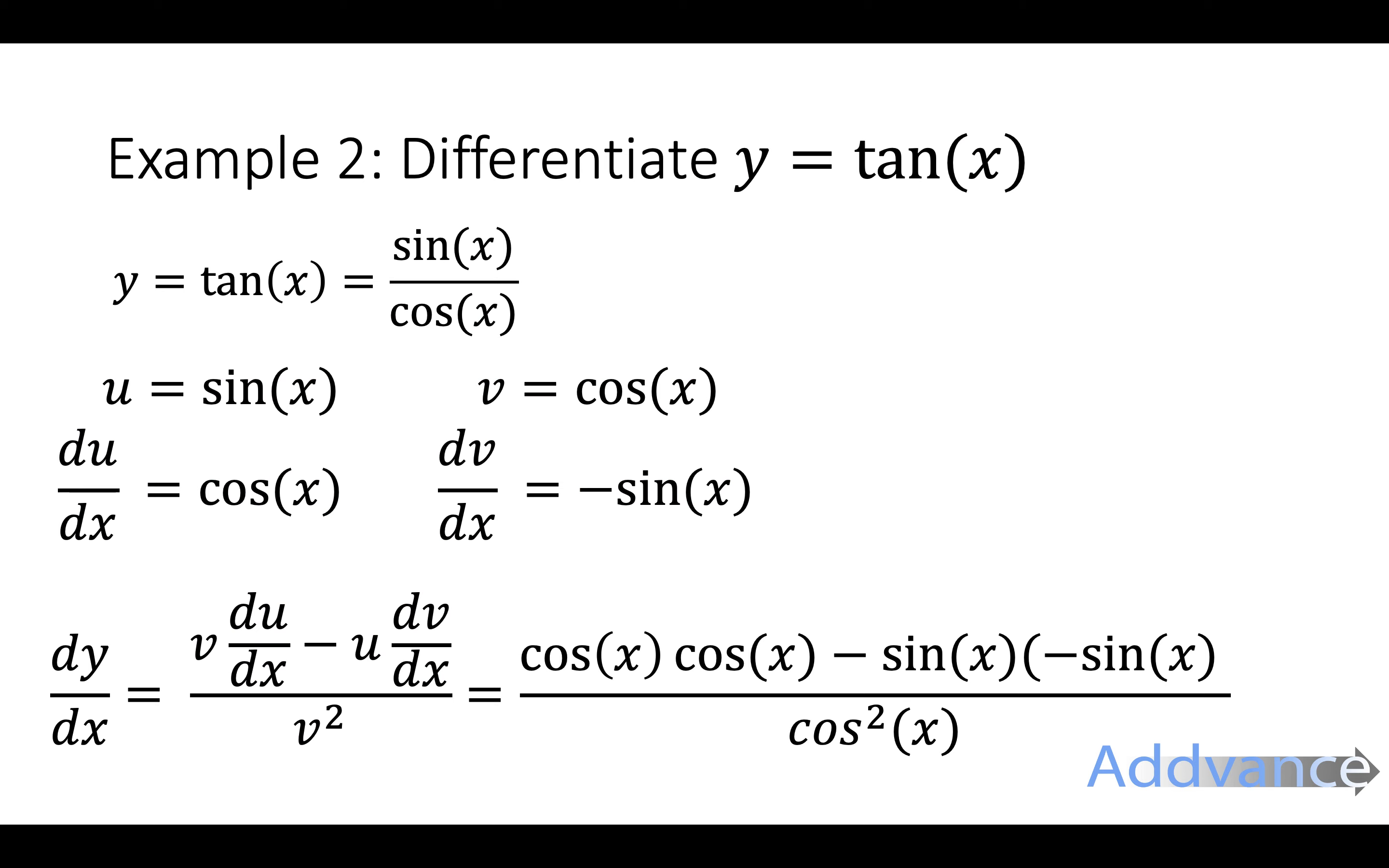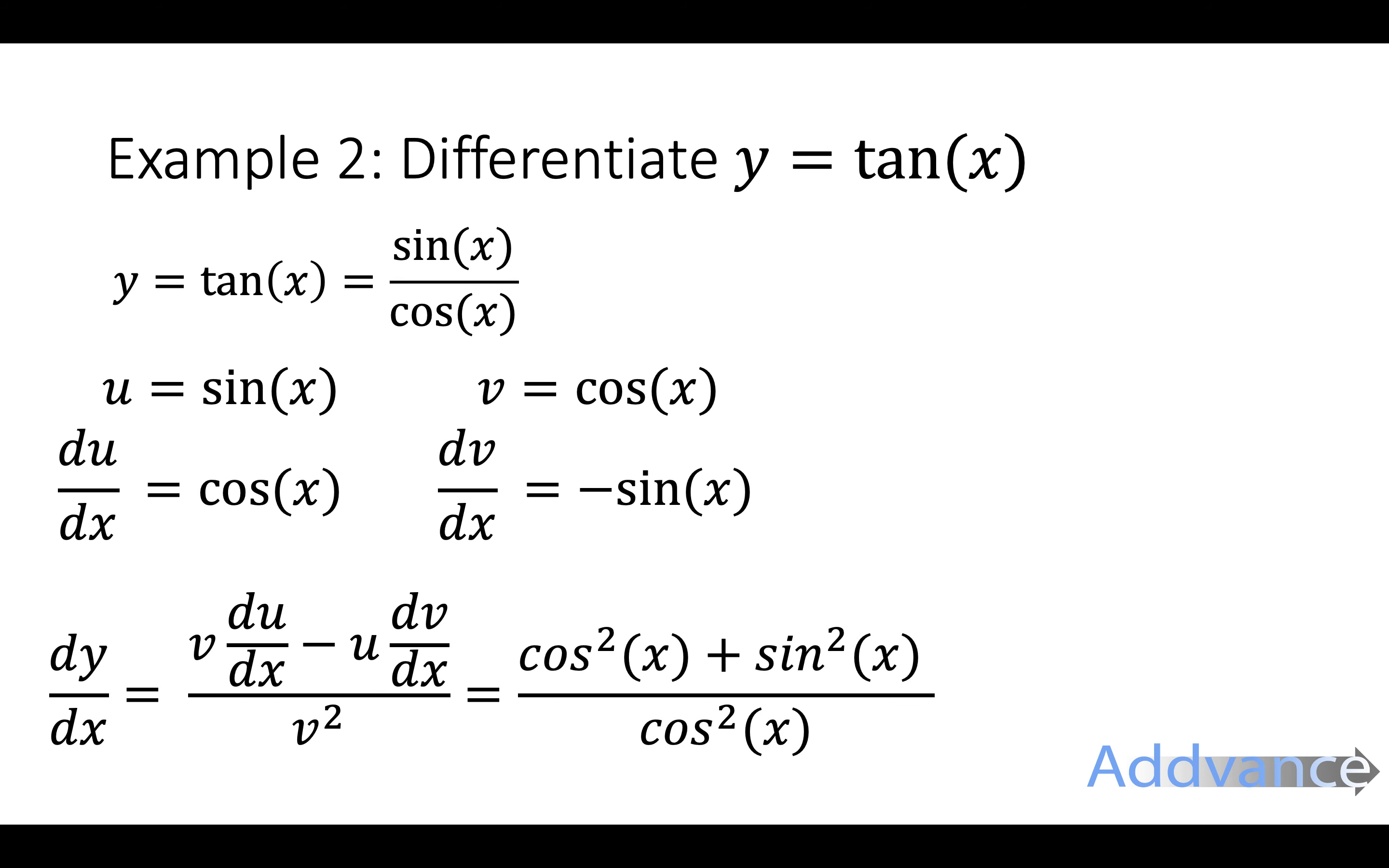We put those numbers in and we get this. Cos of x times cos of x minus sin of x times minus sin of x over cos squared of x. That will simplify. The minus sin of x times minus sin of x becomes plus sin of x times sin of x, which is of course sine squared. We just get cos squared of x plus sin squared of x over cos squared of x.